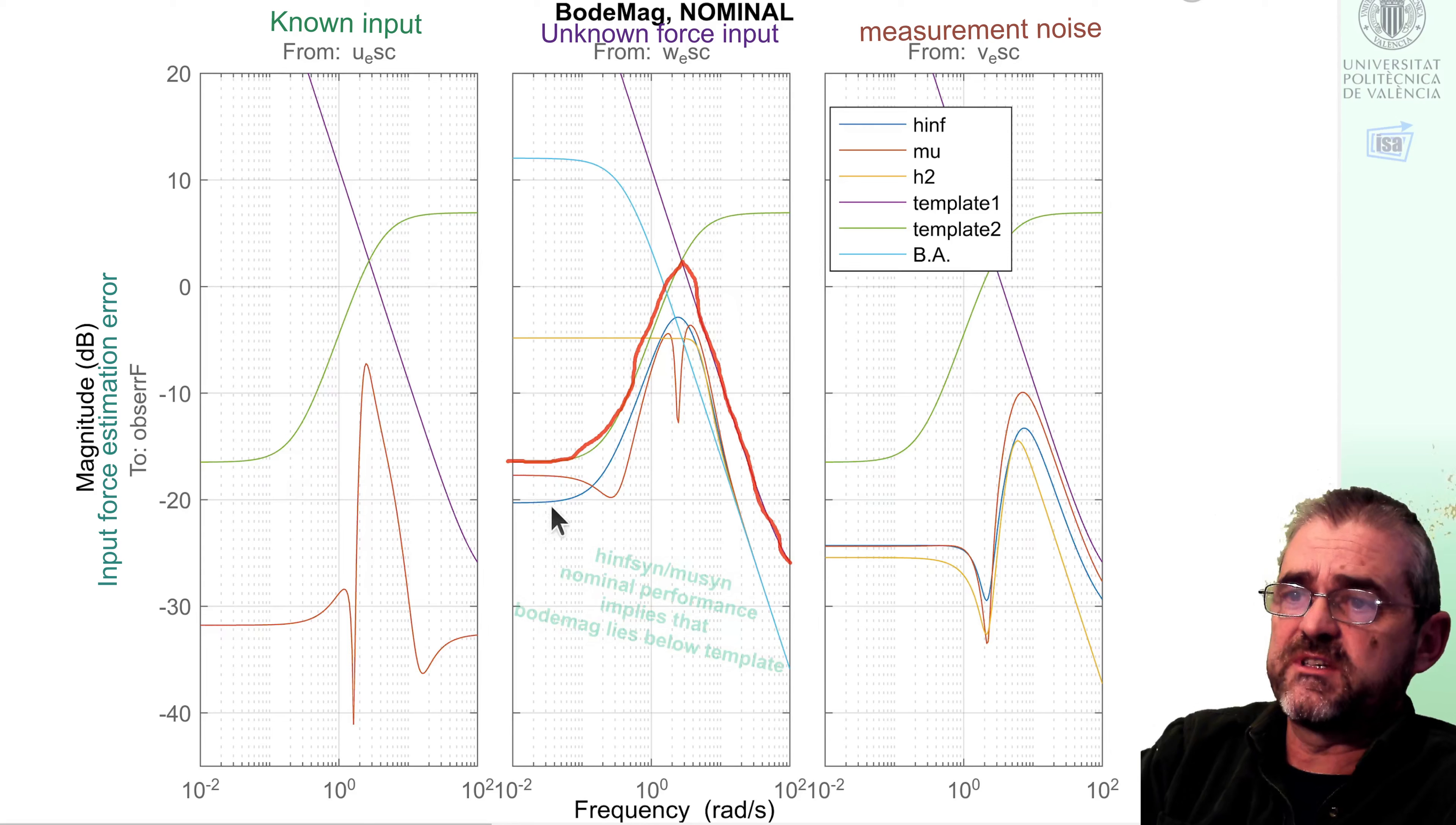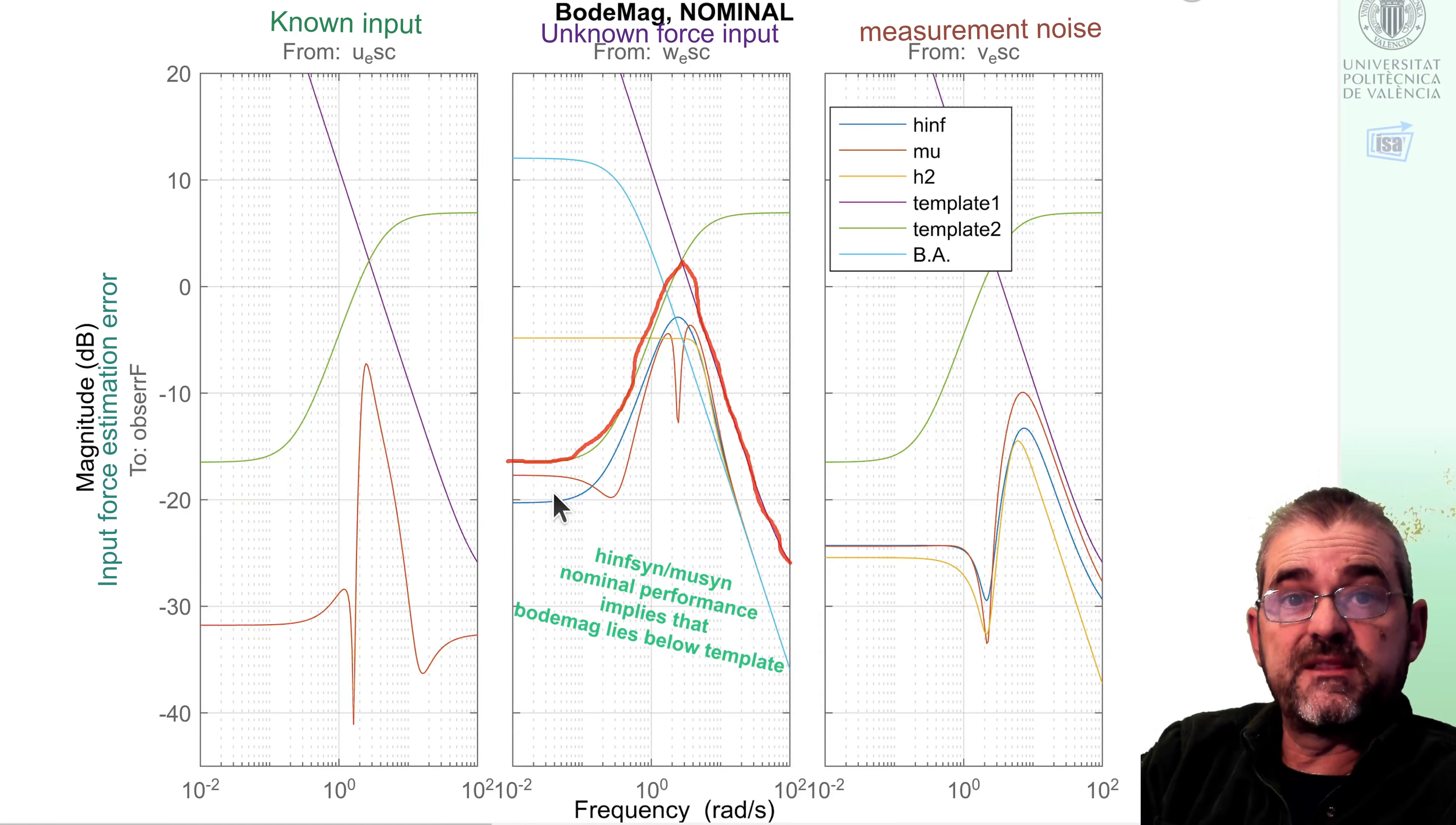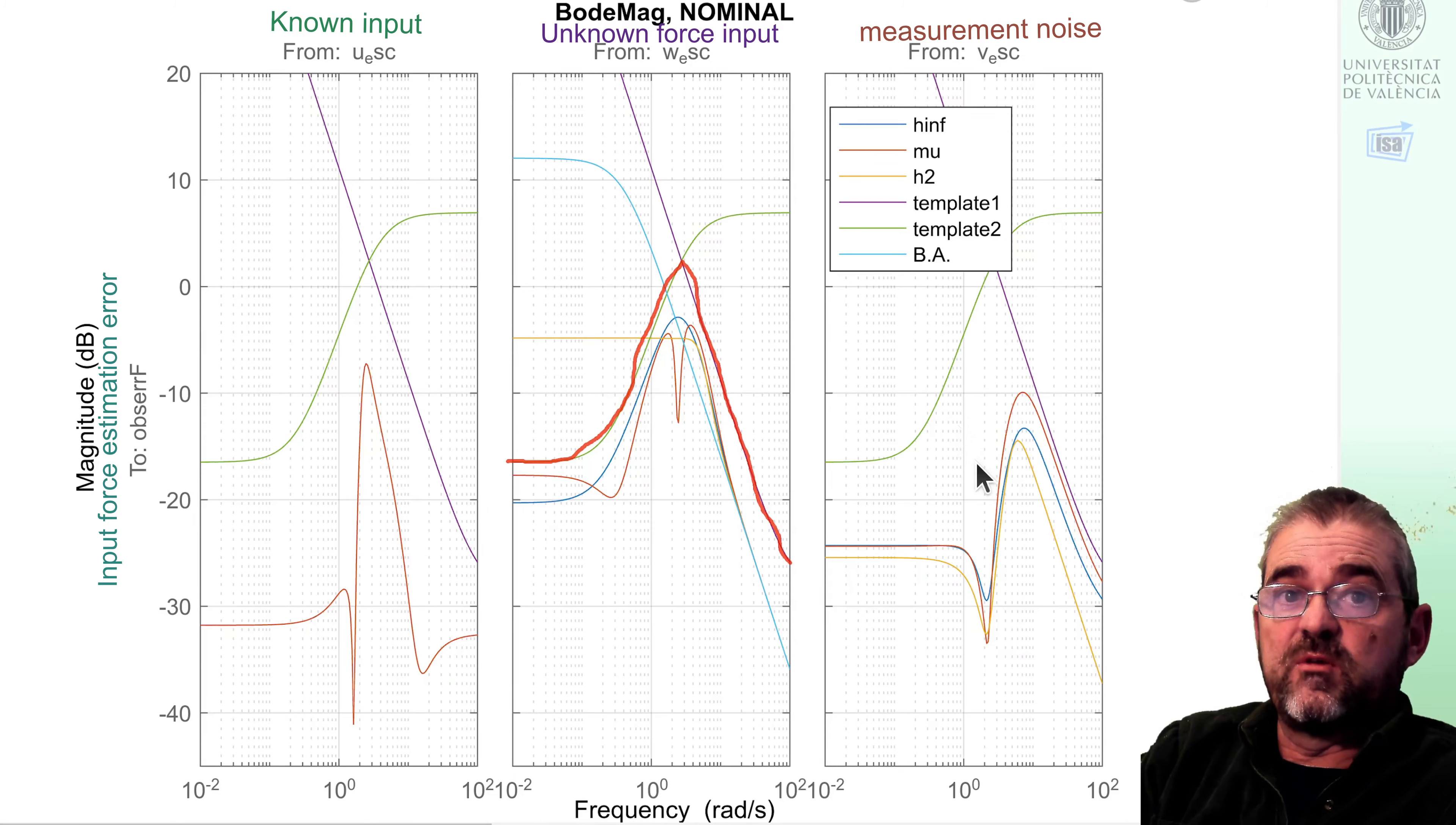But if we concentrate on the H infinity in blue or mu synthesis in red, then we see that of course both achieve nominal performance. And in fact, the performance limit at this frequency, and maybe at this one, is better for the blue H infinity result, because it concentrates on optimizing the nominal model. The effect on observation error of measurement noise, if we look at the plot at the right hand side, is the lowest in the H2 design, it's a bit higher in the H infinity design, and the highest one is the mu synthesis observer, because somehow uncertainty forces the observer to have a higher gain feedback.